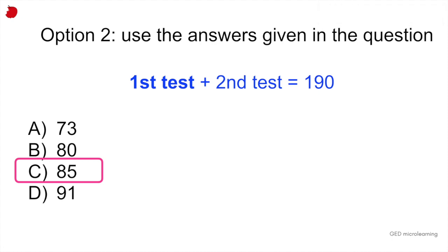So test one plus test two is going to equal 190. And they're telling us in the answer option that those are the possible scores for test one. So if we look at A, if test one is 73, as they're telling us in the answer option, then test two would be 20 points more. So it would be 93. If you add 73 plus 93, that gives you 166. So you can see that this answer is incorrect.